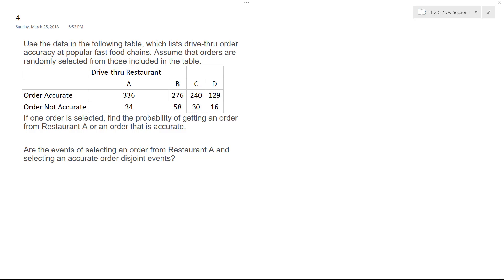All right, so we have a list of data here in the following table, which lists drive-through order accuracy at popular fast food chains. Assume that the orders are randomly selected from those included in the table.